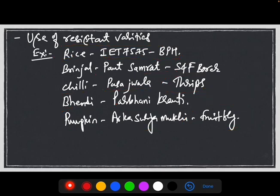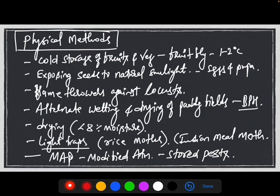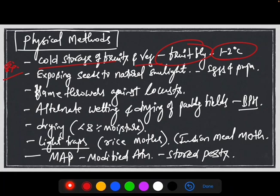The next method of artificial control is physical methods, where physical parameters are modified to reduce the incidence of the insect pest. For example, cold storage of fruits and vegetables — storing the fruits and vegetables at 1-2 degrees Celsius will reduce the incidence of fruit flies. Exposing seeds to natural sunlight — various stages of the insect pest like eggs and pupae are exposed to sunlight, which will affect their life cycle and reduce incidences.